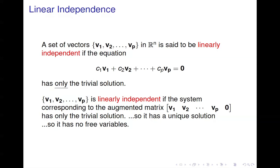If there are no free variables, then you know the vectors are linearly independent. If you do find a free variable, then you know there are an infinite number of solutions to that system, and therefore the vectors are not linearly independent. In that case, we say they're linearly dependent.